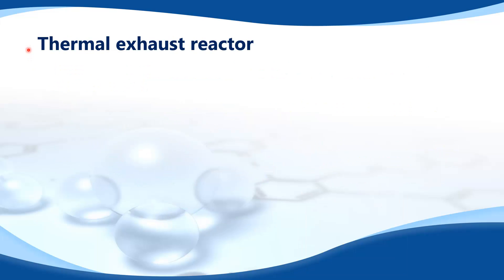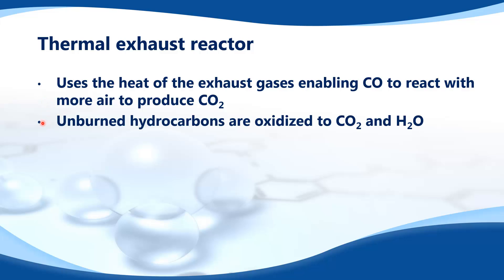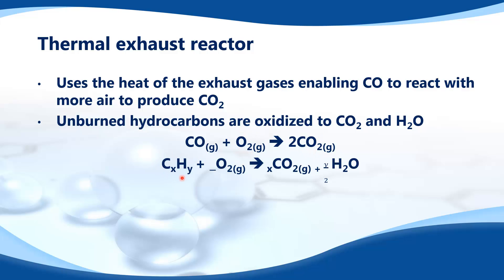The next method of control for carbon monoxide is a thermal exhaust reactor, which uses the heat of the exhaust gases enabling carbon monoxide to react with more air to produce carbon dioxide. Unburned hydrocarbons are oxidized to carbon dioxide and water. Here's the equation for carbon monoxide reacting with oxygen to give carbon dioxide, and here's the equation for unburned hydrocarbons reacting with oxygen, oxidizing to carbon dioxide and water.